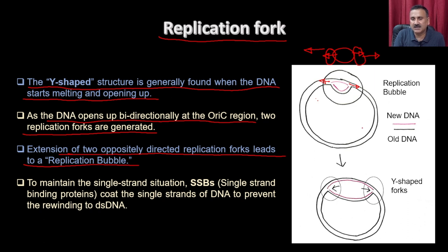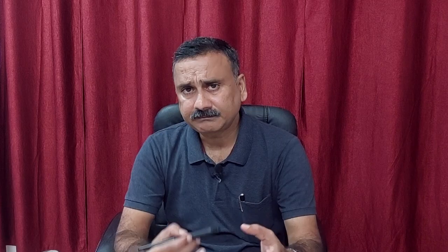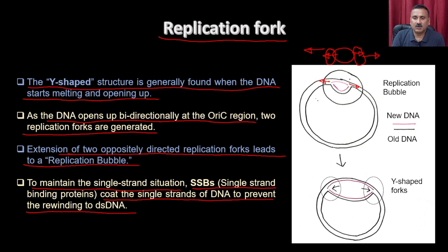Single-stranded DNA binding proteins coat the single-stranded DNA within the bubble to prevent rewinding of the double-stranded DNA. There are two replication machineries — one running in each direction from the origin. Apart from the origin and replication fork formation, a battery of machinery must be assembled at the replication fork to start replication.